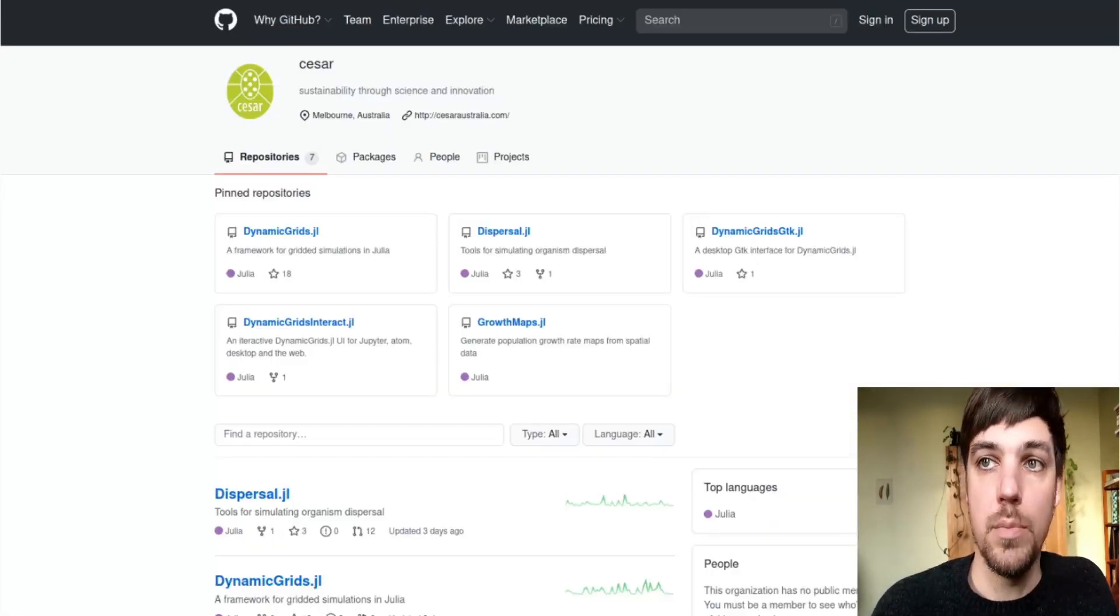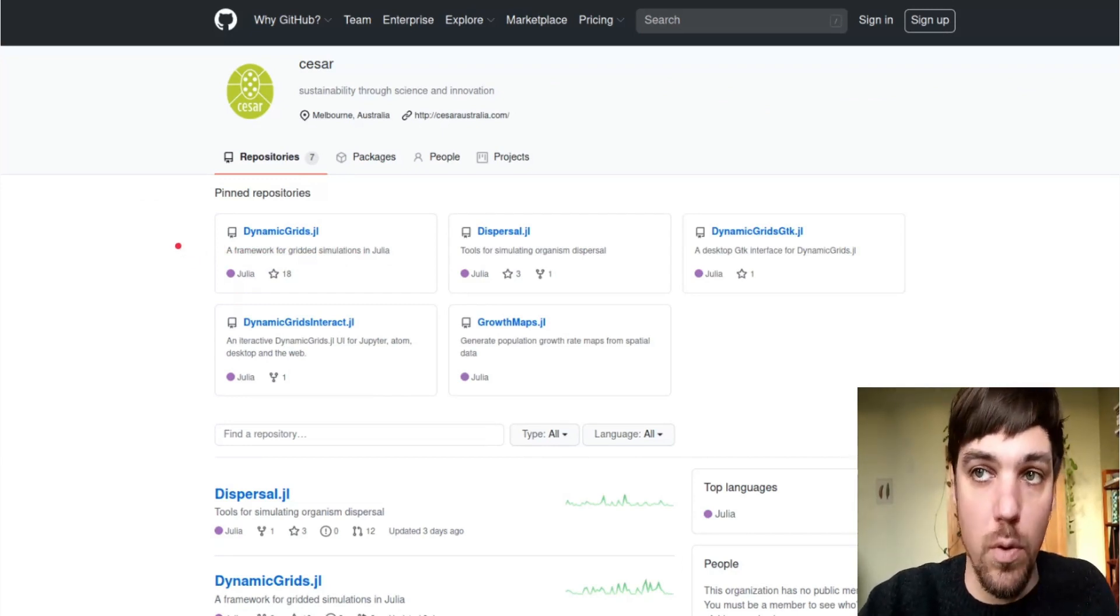At this stage, we have a number of packages published and available on GitHub. Today I'm talking about dynamicgrids.jl as our general framework for modeling that you can use for all kinds of modeling, besides ecological models.